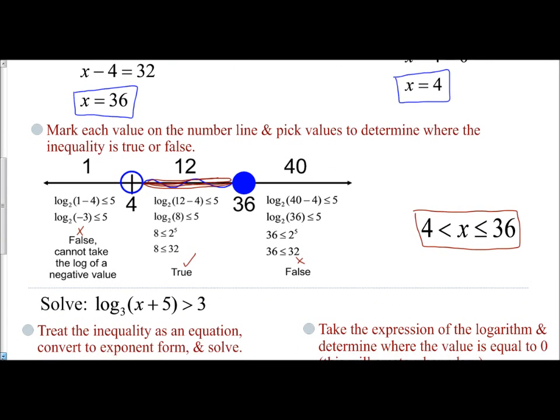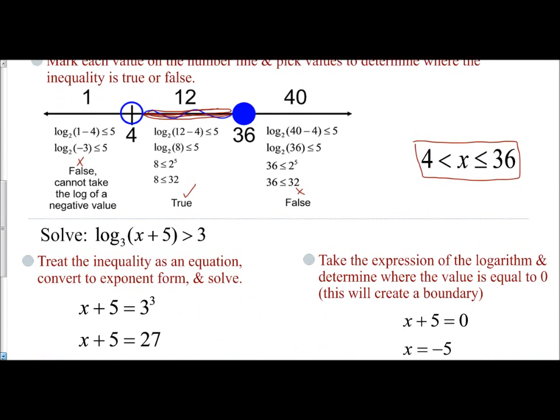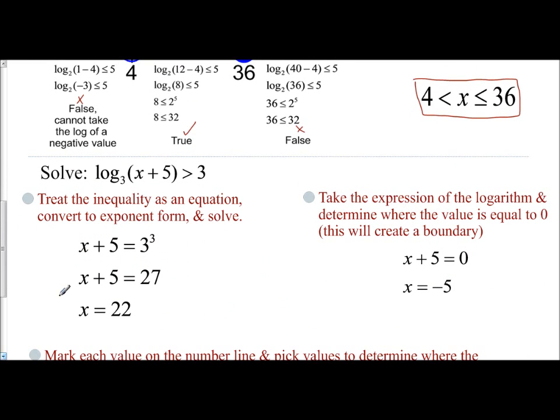So if I take a look at log base 3 of x plus 5 is greater than 3, same idea: treat it like an equation and convert to exponent form. So my expression x plus 5 is equal to my base of 3 to the 3rd power. So x plus 5 equals 27. Solve, x equals 22.